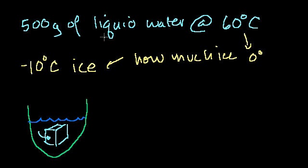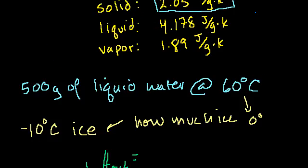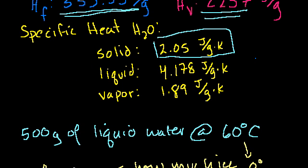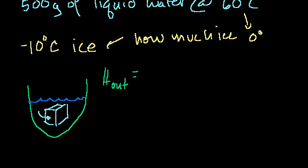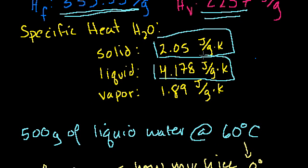So how much energy do we have to take out of the 500 grams of liquid water? Well, it's the same amount of energy that it would take to put into 0 degrees liquid water and get it to 60 degrees. So the heat out of the water is going to be the specific heat of water, 4.178 joules per gram Kelvin times the number of grams of water, 500 grams, times the temperature differential.